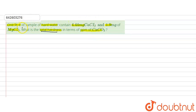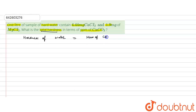When calcium and magnesium salts are treated with a carbonate source, they are converted into calcium carbonate. The hardness of water in terms of ppm can be calculated as: total mass of calcium carbonate divided by mass of water, multiplied by 10 raised to the power 6.